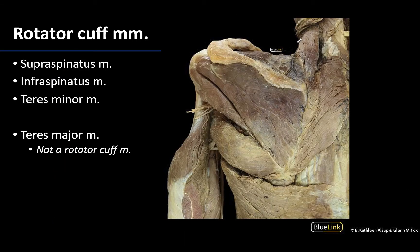Deep to the deltoid and also in the shoulder region are the rotator cuff muscles. There are three posteriorly located rotator cuff muscles and one that is anteriorly placed. The three posterior muscles all have a distal attachment on the greater tubercle of the humerus.